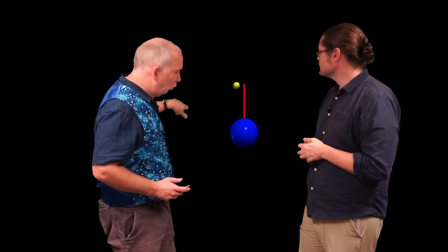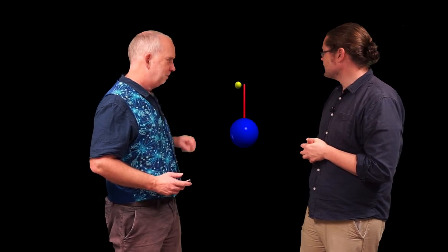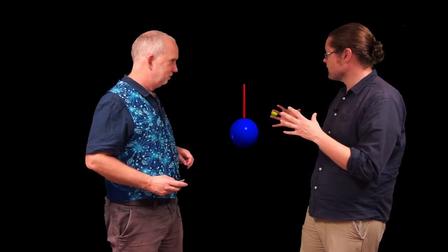You see that it still orbits the Earth, but the orbit is no longer a circle. Yeah, it's kind of become, the shape is changing in the way it's moving around.